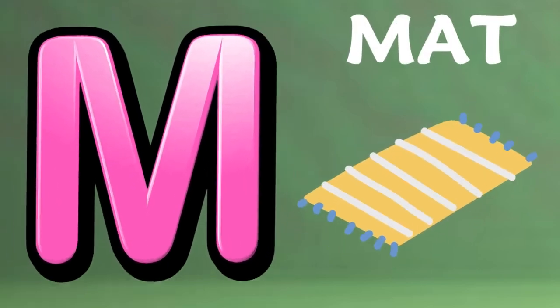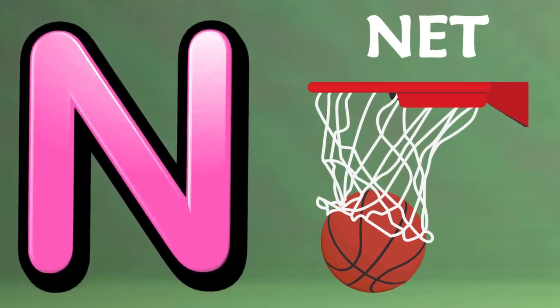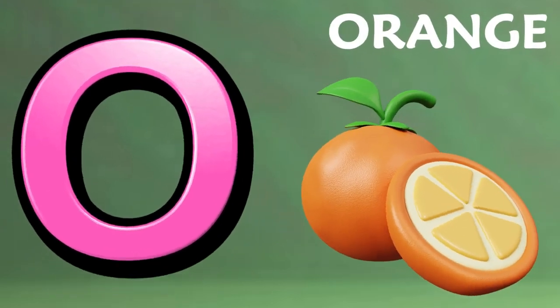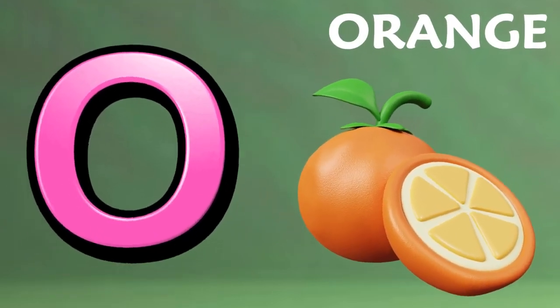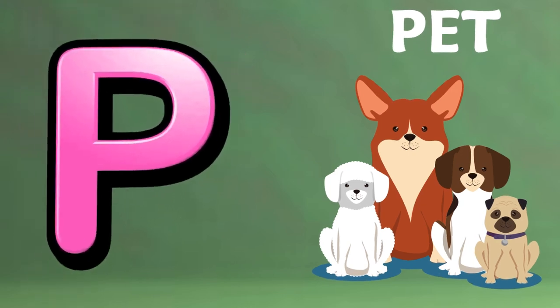M is for mat, m-m-mat. N is for net, n-n-net. O is for orange, o-o-orange. P is for pet, p-p-pet.